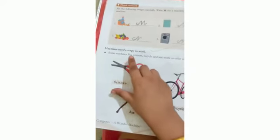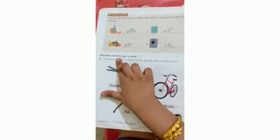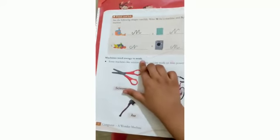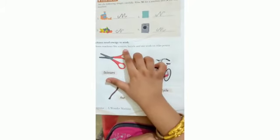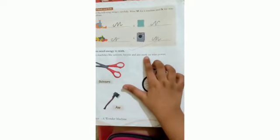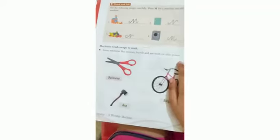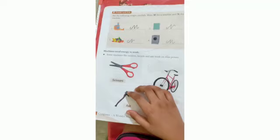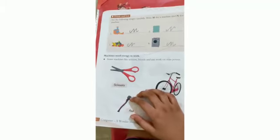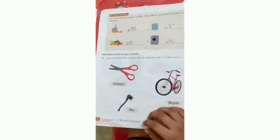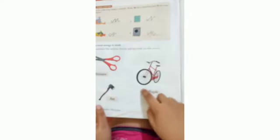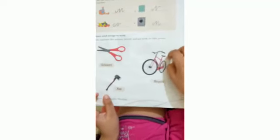Turn the page. You can see that machines need energy to work. Some machines like scissors, bicycle and axe work on manpower. This machine is when we operate the machine. If we don't operate the machine, then it will not work. If you don't pedal the bicycle, then it will not go. If I don't use scissors, it will not work.